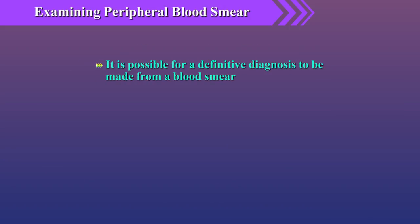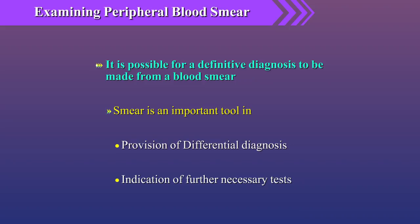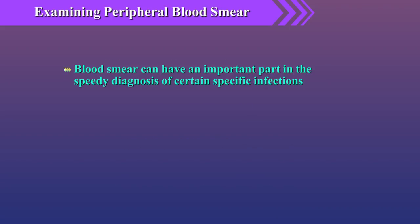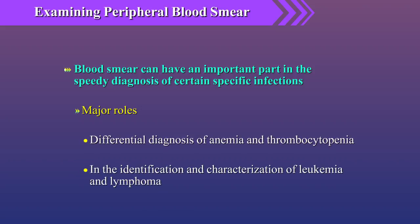Sometimes it is possible for a definitive diagnosis to be made from a blood smear. More often, the smear is an important tool in the provision of a differential diagnosis and the indication of further necessary tests. The blood smear can play an important part in the speedy diagnosis of certain specific infections. Otherwise, its major roles are in the differential diagnosis of anemia and thrombocytopenia, and in the identification and characterization of leukemia and lymphoma.